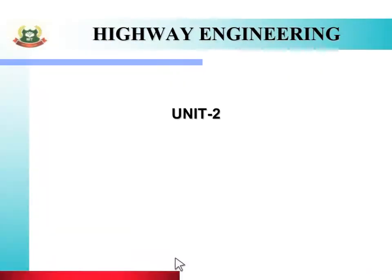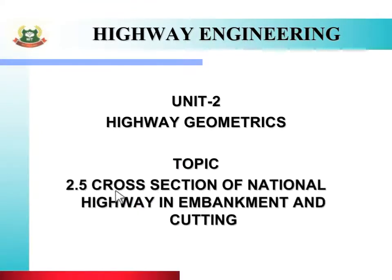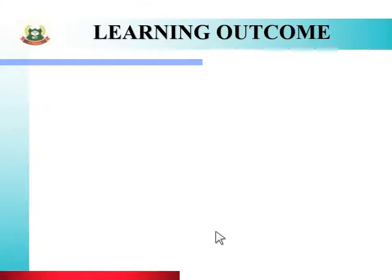In today's session we will see Unit 2, that is Highway Geometrics, and today's topic is cross section of national highway in embankment and cutting. To study this topic we will go through the learning outcomes, which include course outcome, program outcome, and unit outcome.